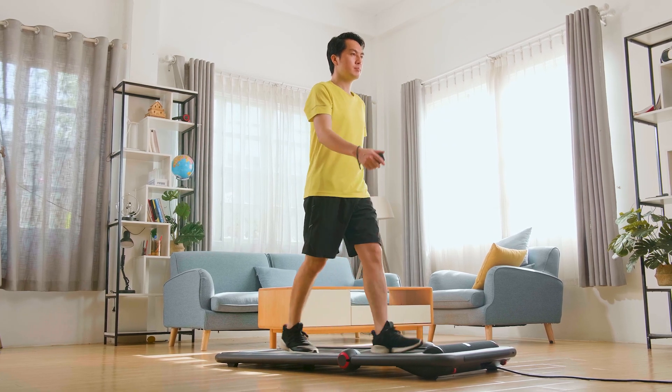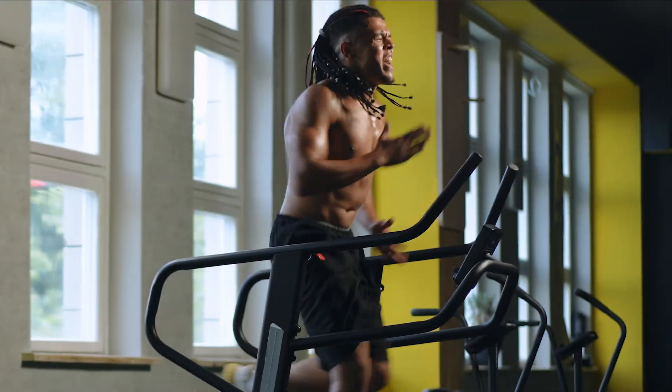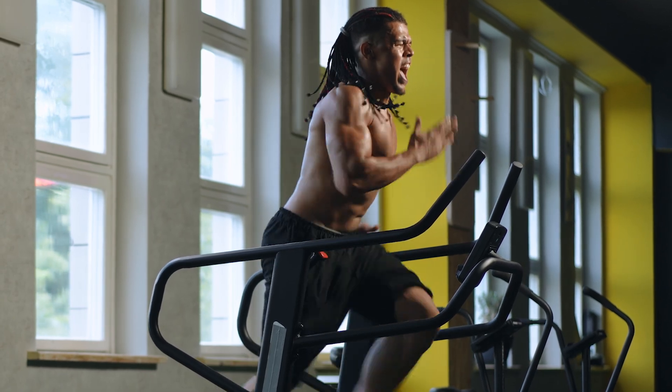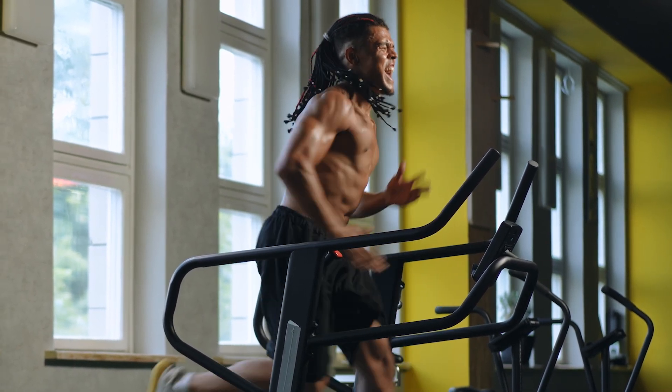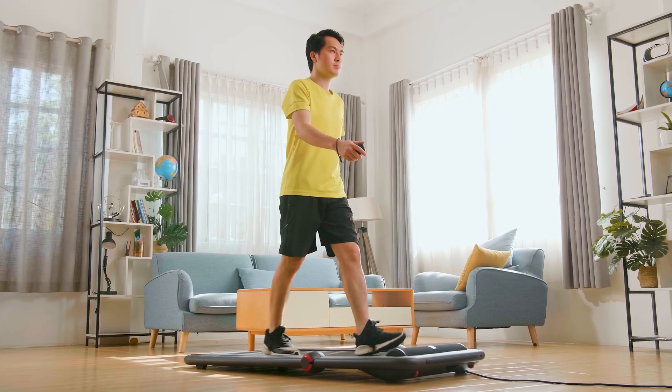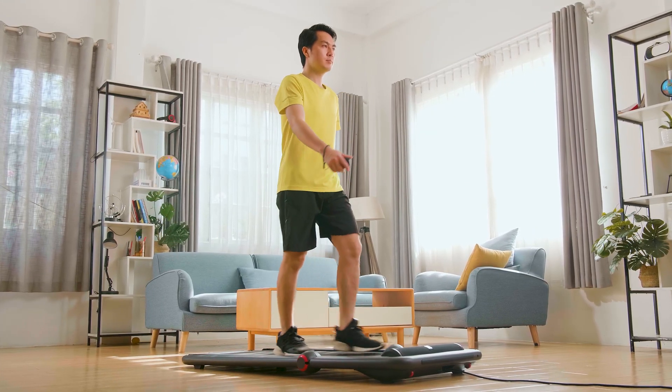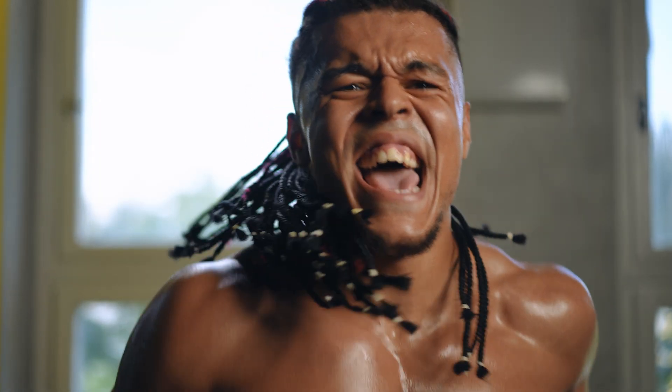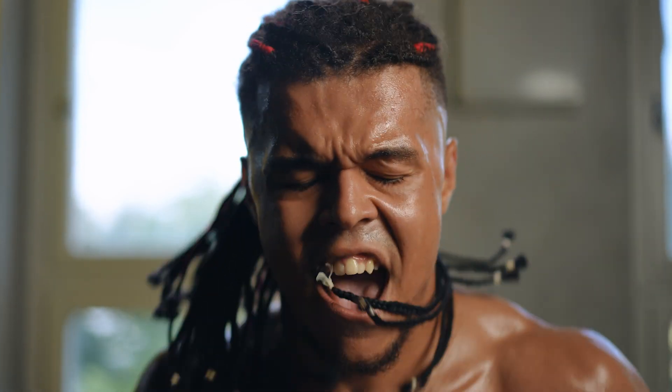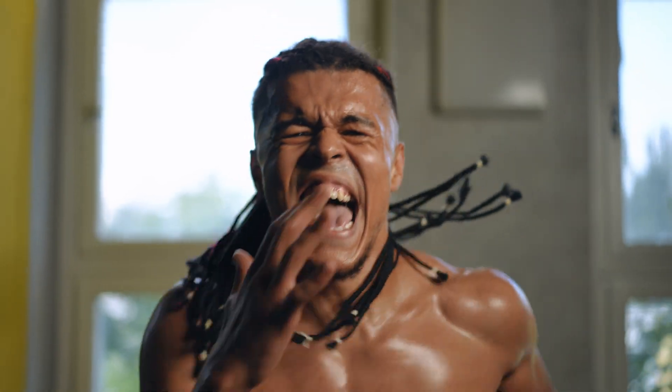Let's say you're on a treadmill, walking at a comfortable pace, while someone else is sprinting at full speed next to you. To them, time feels like it's rushing by, while for you, it's moving at a regular speed. But if you could watch them from your spot, their movements would seem almost in slow motion. That's time dilation in action.